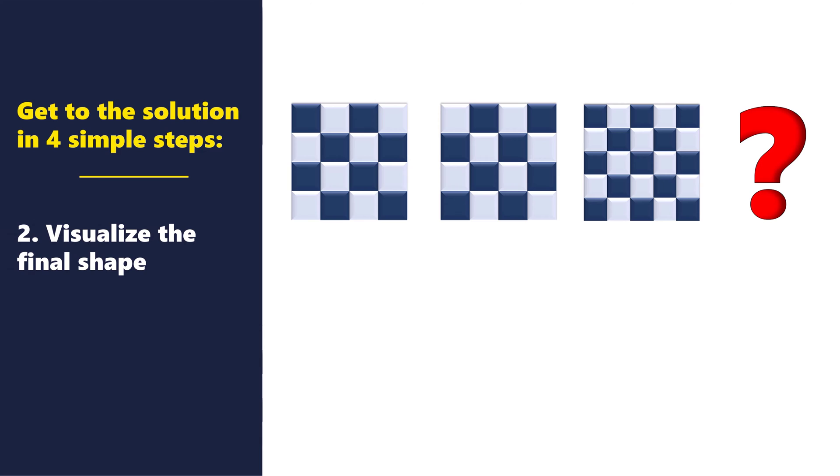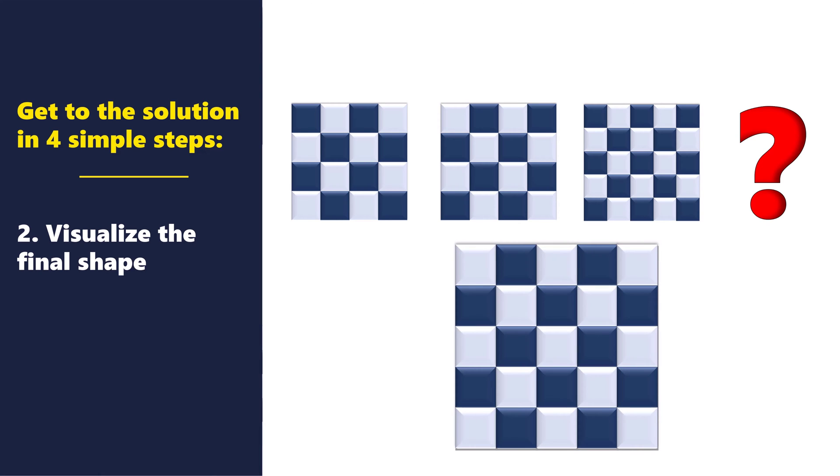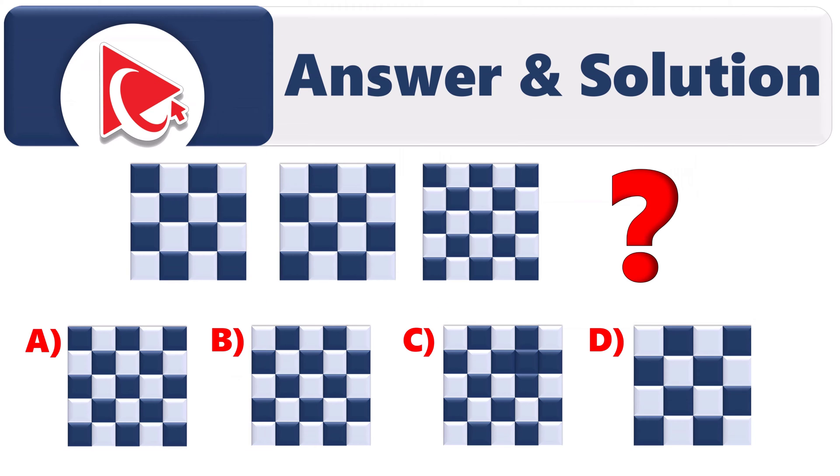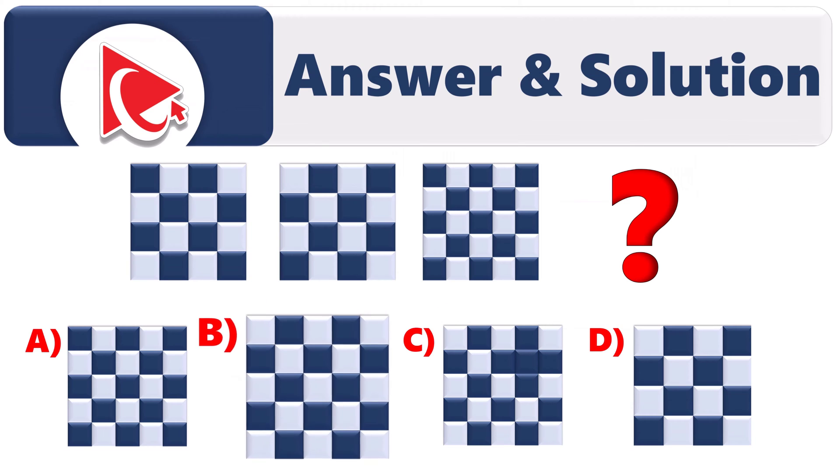In step two, we need to visualize the final shape. Based on what we've just learned, our final shape should be 5x5 in size, with alternating colors, and should have a lighter small square in the upper left corner. There are two choices that match this option, choices B and C.